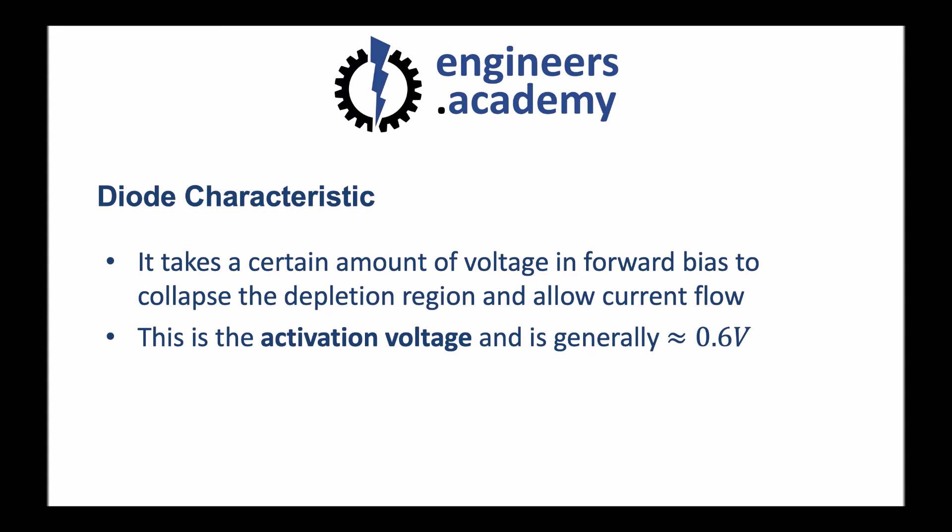This voltage that's required is called the activation voltage and is generally around 0.6 or 0.7 volts. So the p-n junction in the diode has a depletion region which prevents current from flowing. We add forward bias voltage and gradually that depletion region shrinks and shrinks until current can flow. And generally, it takes around 0.6 or 0.7 volts of forward bias voltage to accomplish this collapse of the depletion region.